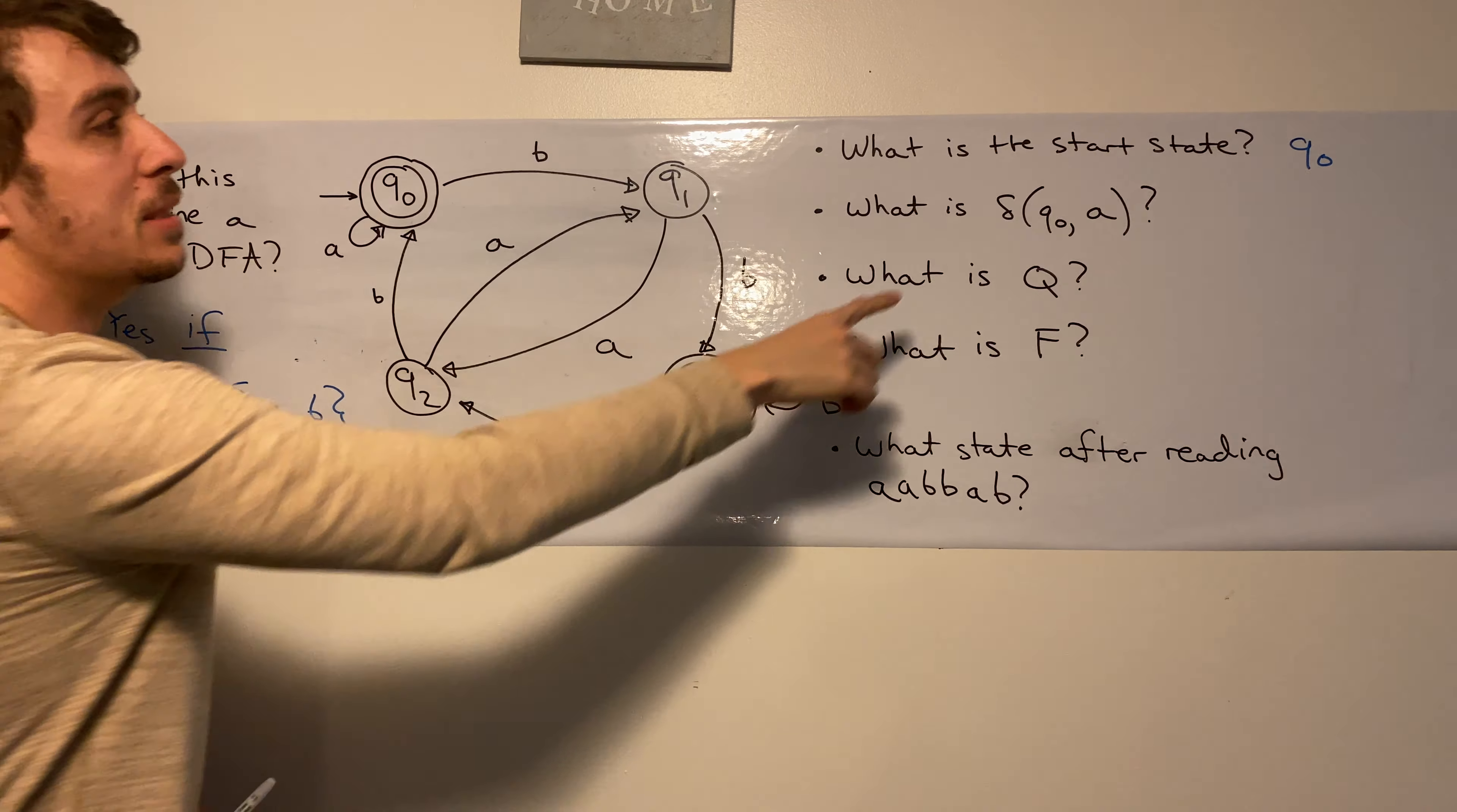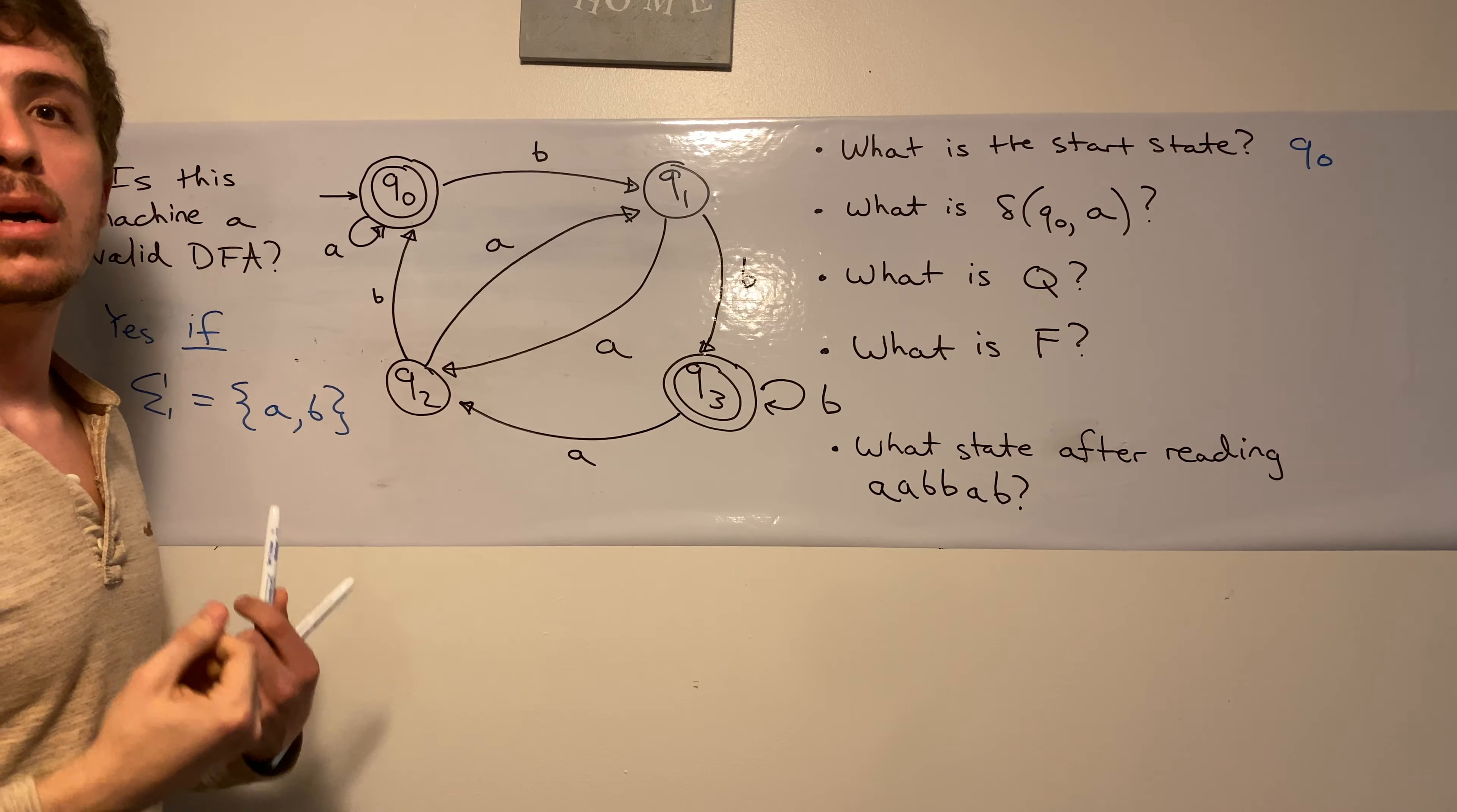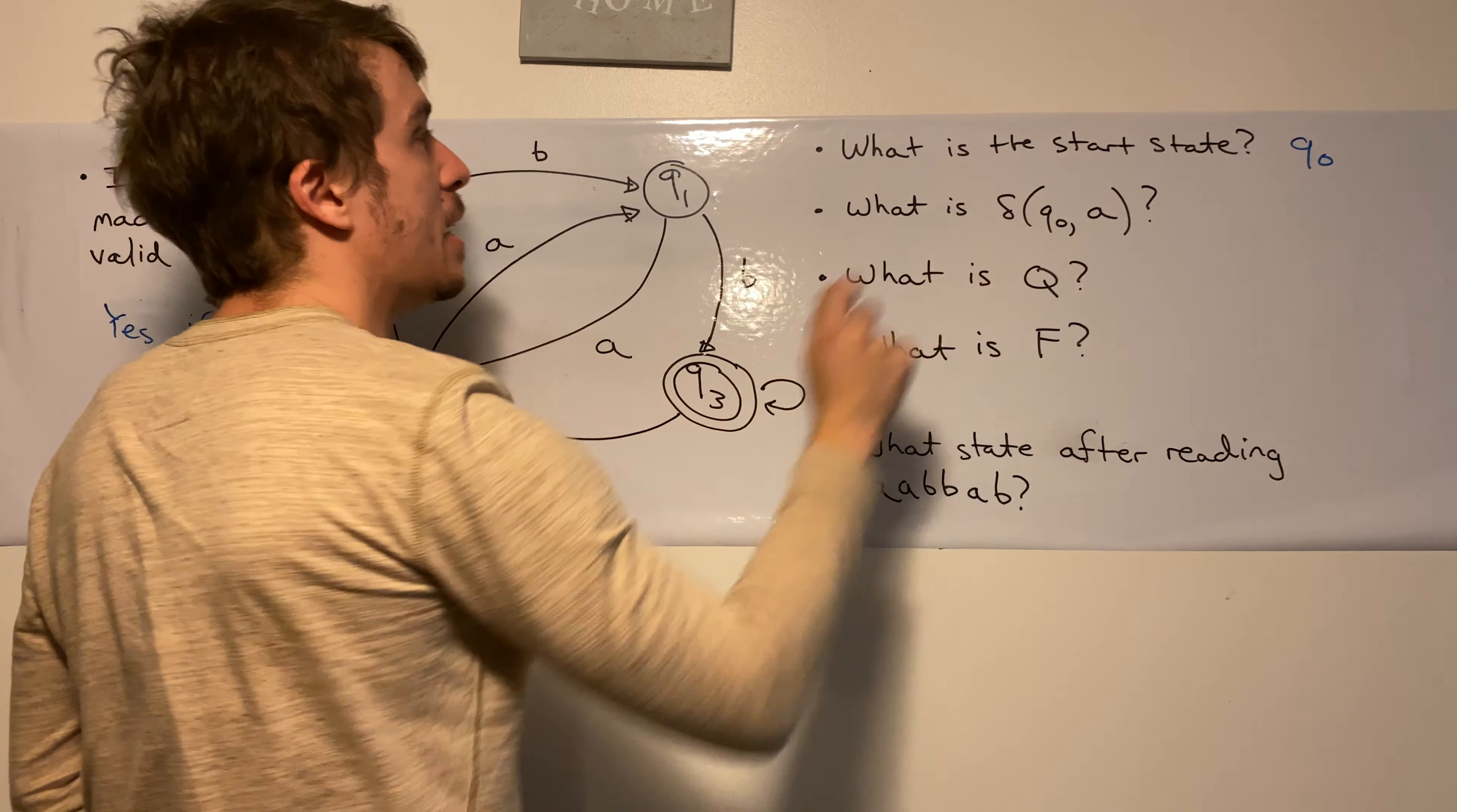What is delta of Q0 with A? So remember what delta means. Delta represents the transition function of the DFA. So it says, what state do we go to starting from Q0 reading an input A?